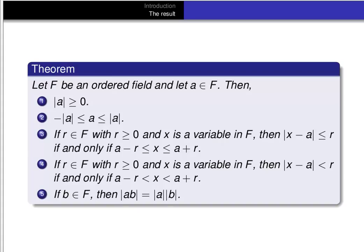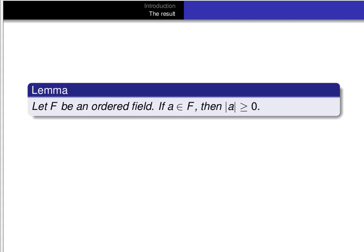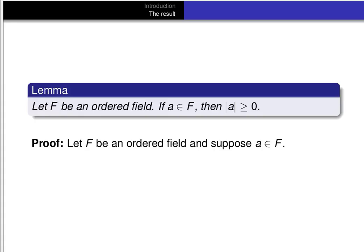That's the theorem we're going to prove, so let's get started. We'll take each part of the theorem as a lemma and prove it separately. Let f be an ordered field. This is the first part: if a is an element of f, then the absolute value of a is greater than or equal to 0. We'll start by supposing that f is an ordered field and that a is an element of f. This result follows directly from the definition of the absolute value and trichotomy. By trichotomy, a is less than 0, equal to 0, or greater than 0, and we'll take each case separately.